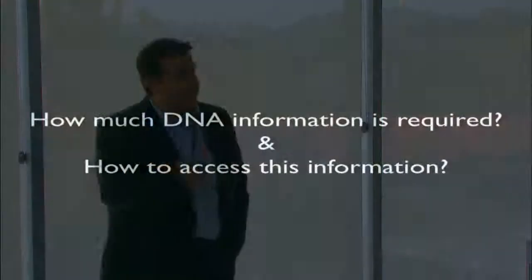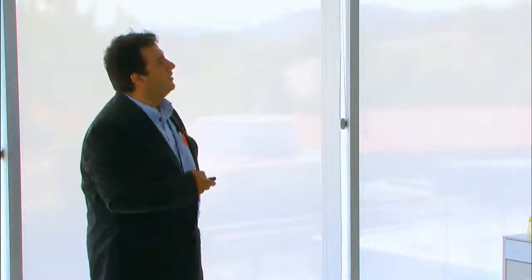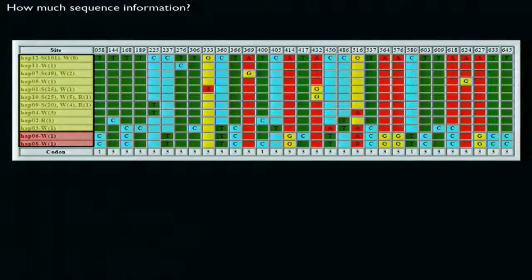That brings me to the next topic: how much DNA information do we need and how do we access it? This is a fundamental question we need to ask in terms of genomics. Here is an alignment of variable sequences — haplotypes of two different closely related species. If you look at position 58, you can robustly differentiate these two groups using just that position. Walking across the alignment, there are several such positions that can separate the two species.